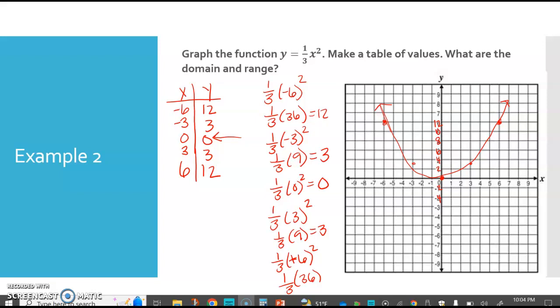When we're looking at this, notice our (0,0) is at the bottom and I know it's not a perfect u and they never are when we hand draw them, but we have our point at (0,0), we have a point at (-3,3) and (3,3), a point at (-6,12)